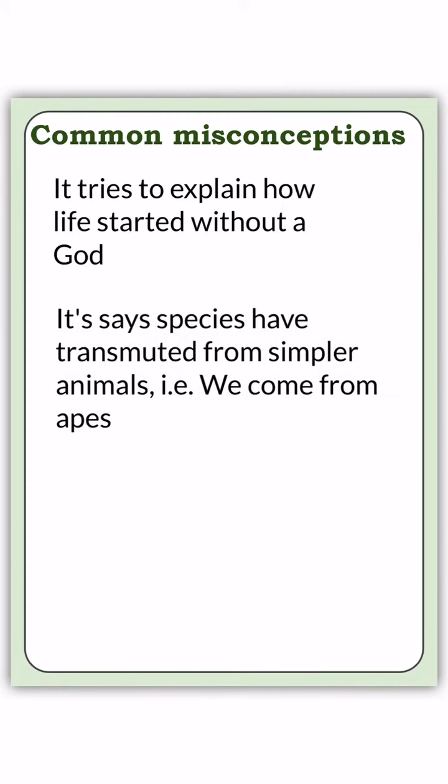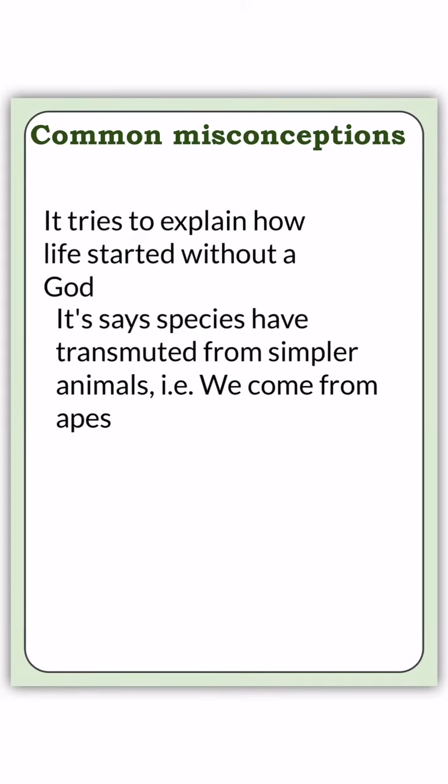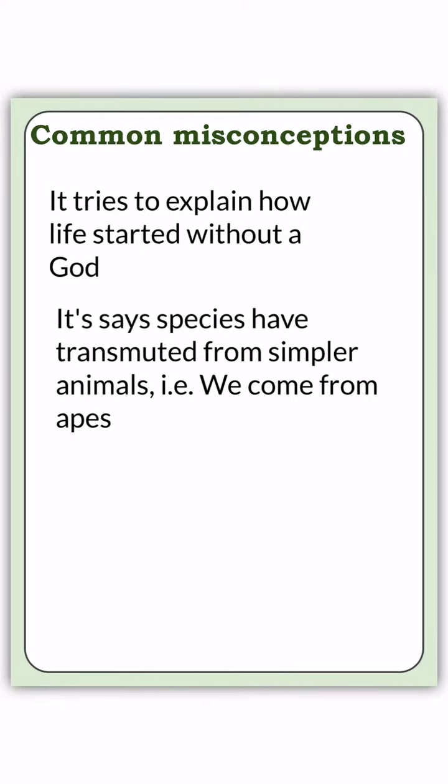Another one that comes up a lot: it says species have transmutated from simpler animals, i.e. we come from apes. We'll take a look at how that one is false. And the final one that we will briefly take a look at is, well, it's just a theory. So we'll take a look at why that doesn't really hold up either.